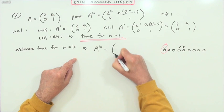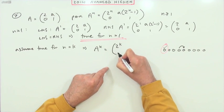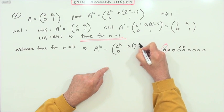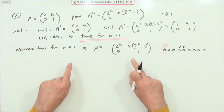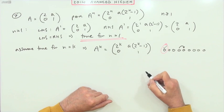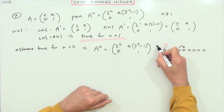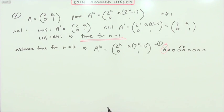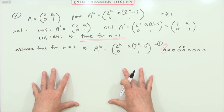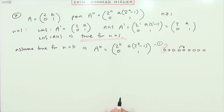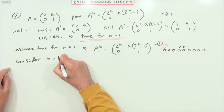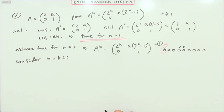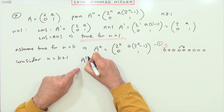A to the k should equal 2 to the k, 0, a times 2 to the k minus 1, 1. That's the inductive hypothesis. Assuming that's true, I could call that equation 1 so I can refer to it, because during the proof by induction you have to call that into play. Assume it's true for n equals k. Now consider the next term. Consider n equals k plus 1. What would happen there if you had A to the k